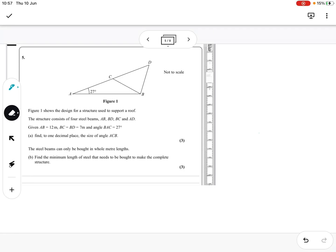Right, now we're on question 5 of the October 2020 exam, AS Pure Paper P1. In this question, we have a triangle. Figure 1 shows the design for a structure used to support a roof. The structure consists of four beams, AB, blah blah blah. So let's fill in the information.